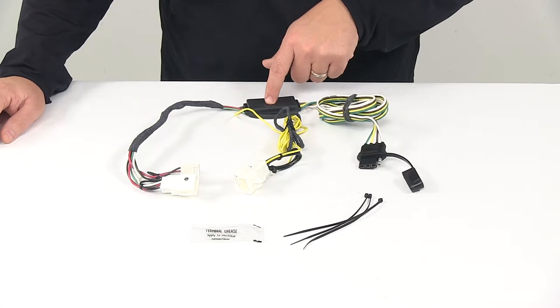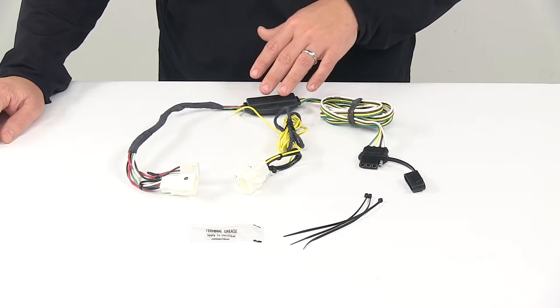It includes a tail light converter, that's this box right here. This ensures that your vehicle's wiring matches that of your trailers.